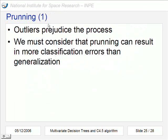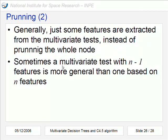In pruning these kinds of decision trees we have to consider two aspects: that outliers prejudice the process because outliers make the tree a little bit specialist in the training set. But on the other side sometimes the act of pruning can result in more errors than corrections. So we have to balance these two considerations.